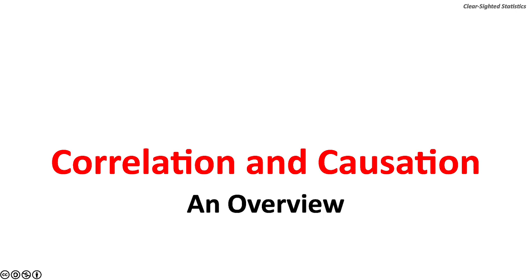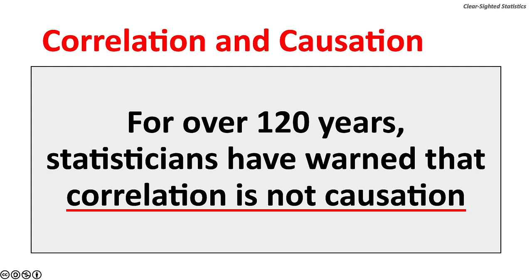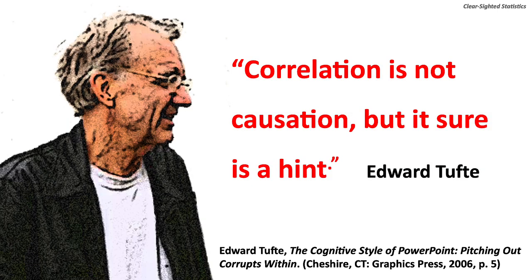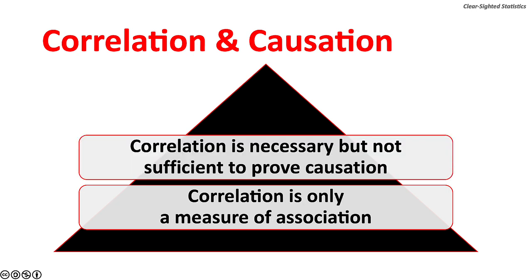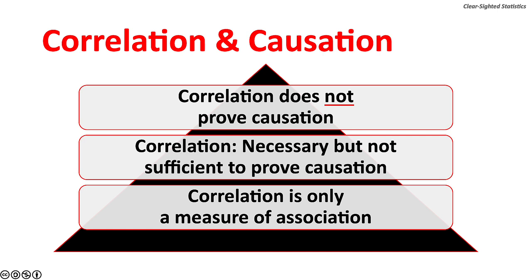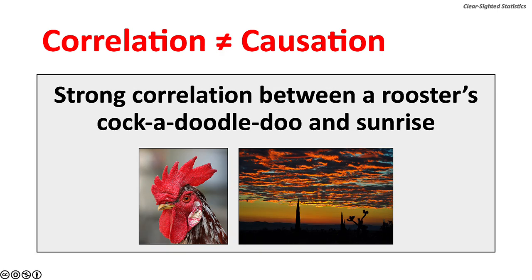For over 120 years, statisticians have warned that correlation is not causation. As statistician Edward Tufte wrote, correlation is not causation, but it is sure a hint. Correlation measures an association and is necessary but not sufficient to prove causation. There is a strong correlation between a rooster's cock-a-doodle-doo and sunrise, but no reasonable person believes that a rooster's crowing causes the sun to rise.